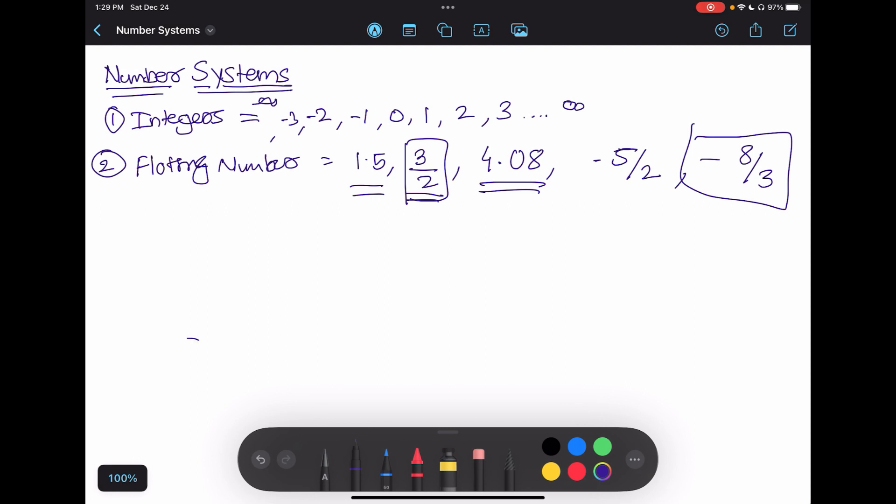Now as we understand what is integers and floating numbers, I will move forward with the third concept, which is even numbers. In its simplest form, any number which is divisible by 2 and remainder is 0.